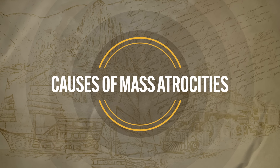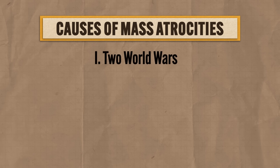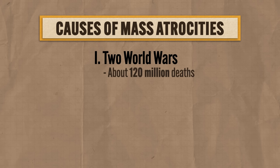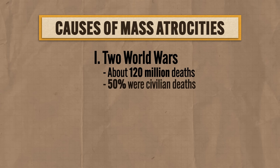Unfortunately, humans found more ways to kill each other in the 20th century than in any other century in our collective history. One major cause of death was the two world wars, which combined led to a total of about 120 million deaths on the upper end of the estimates, and something like half of those deaths were civilians that perished through bombings and famine.